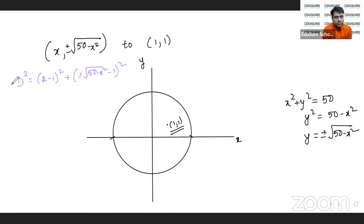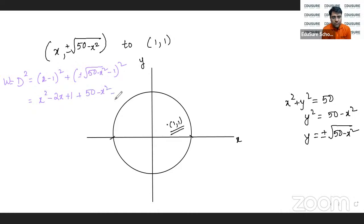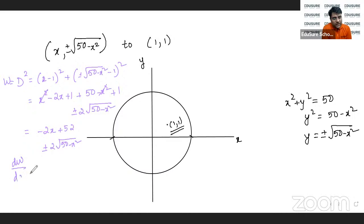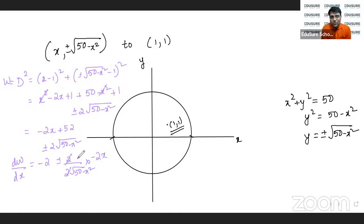D squared equals (x minus 1) squared plus (plus or minus root of 50 minus x squared minus 1) squared. Expanding: x squared minus 2x plus 1 plus 50 minus x squared plus 1 plus or minus 2 times root of 50 minus x squared. Taking the derivative with respect to x and setting it to zero, with the term involving 2 times root(50 minus x squared) differentiated as minus 2x divided by root(50 minus x squared).